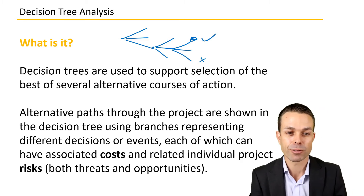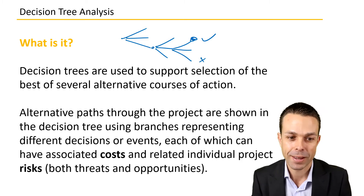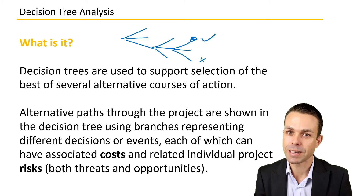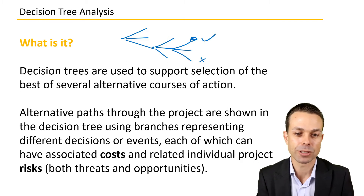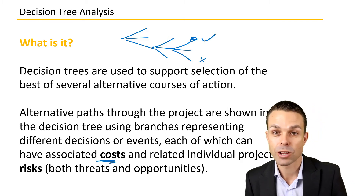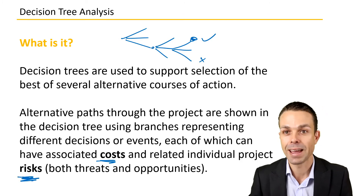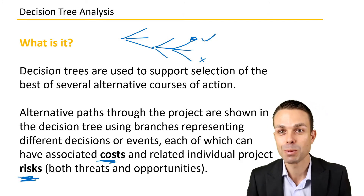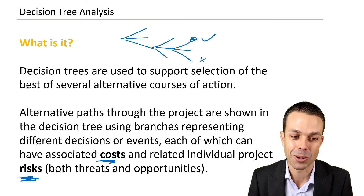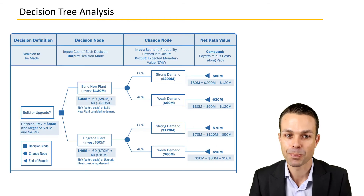Each of these branches can have associated costs and related individual project risks assigned to them as well. Those risks could be both positive or negative — as we know, we've got threats and opportunities.